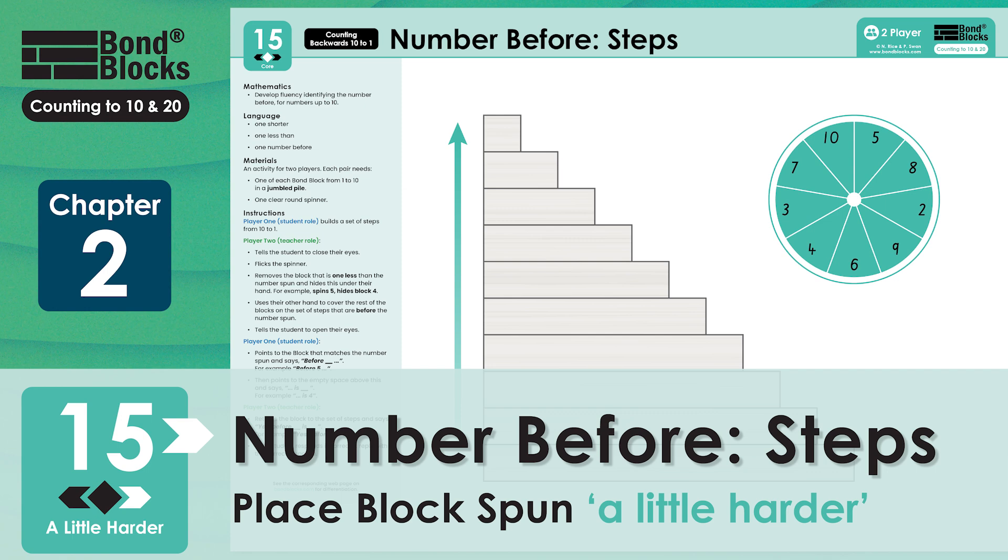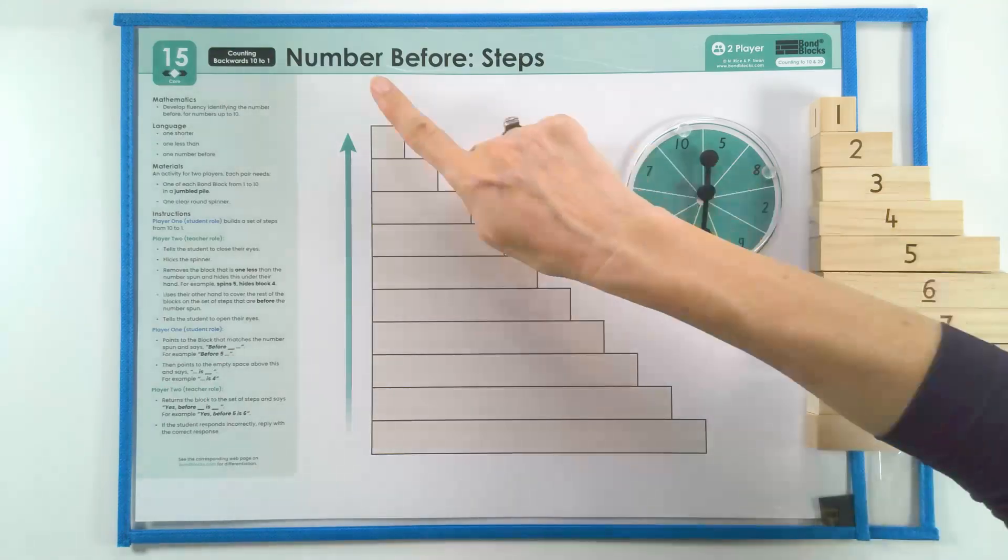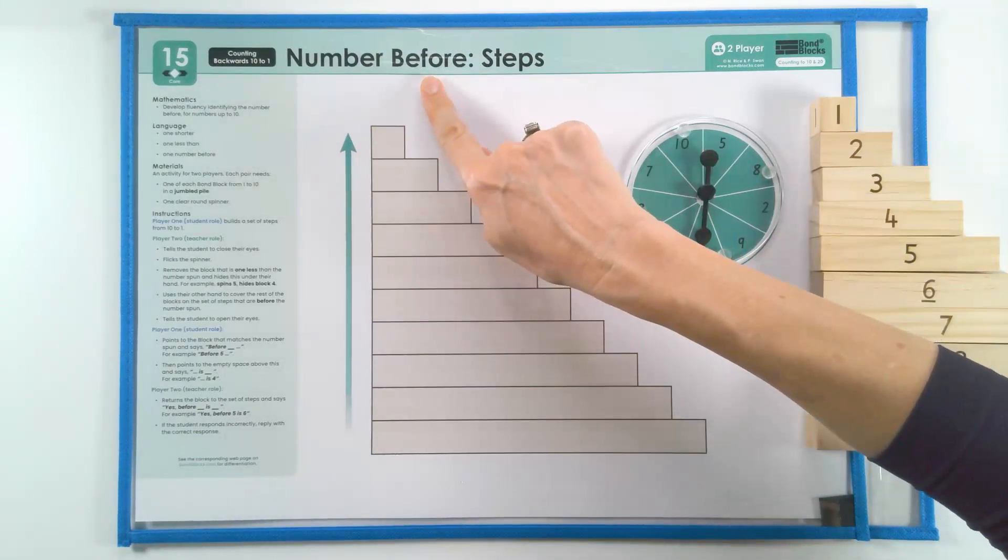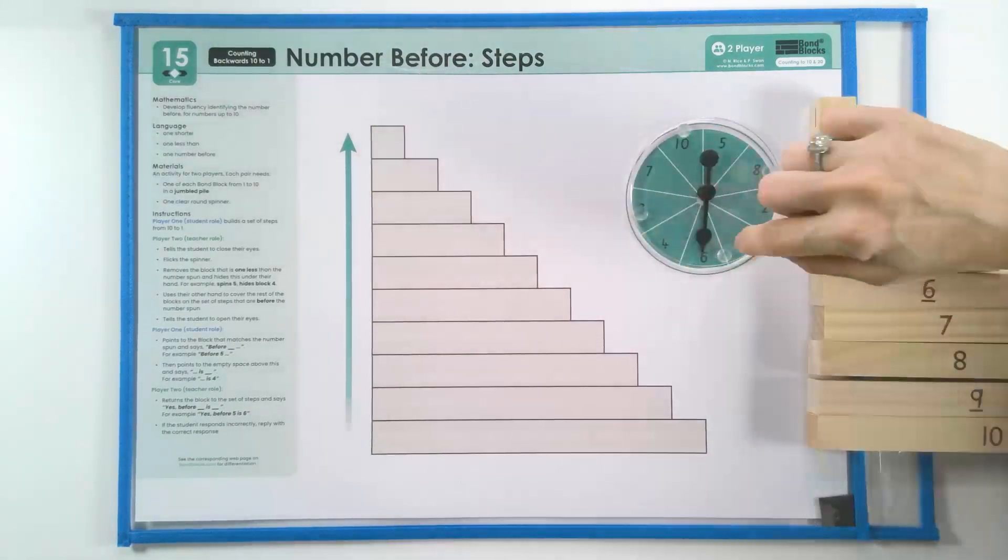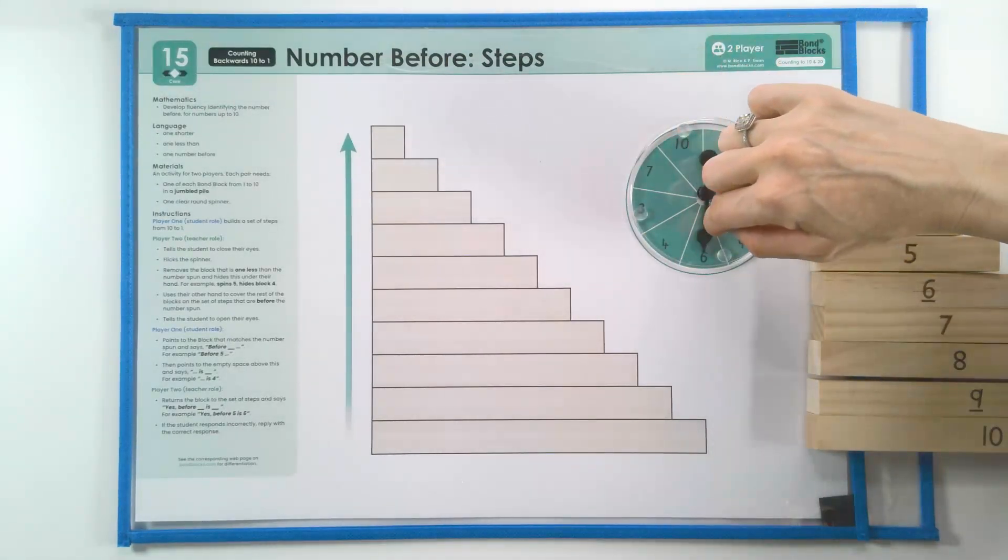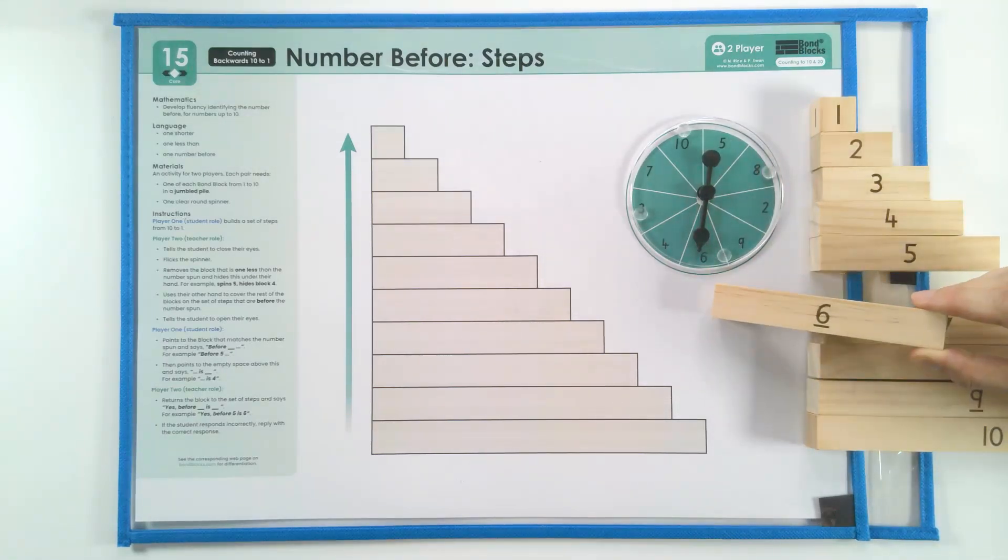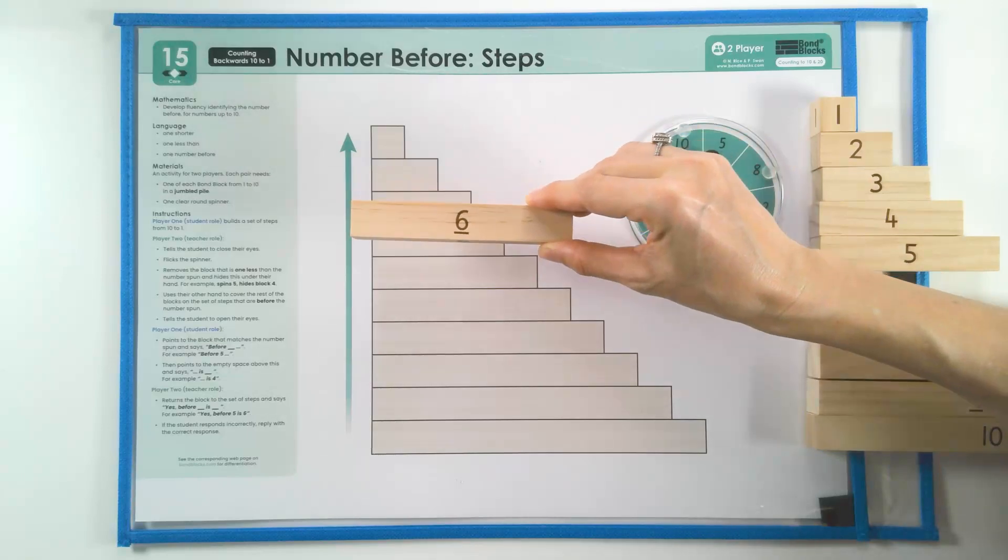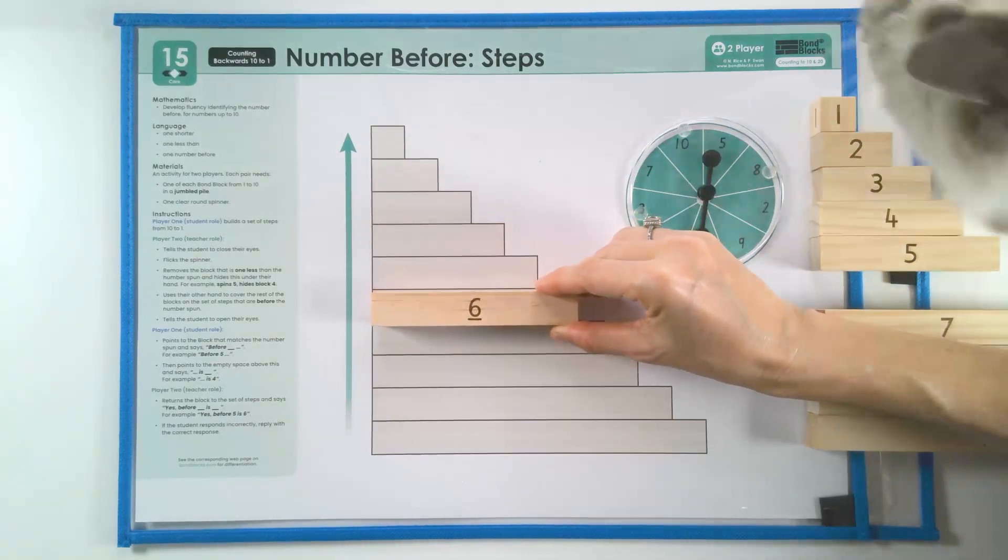Welcome to activity 15, a little harder. In this activity we are still going to say the number before. However, when I flick the spinner, I'm going to place the block that matches the number spun. To place it, I'm not going to count. Instead, I'm going to look at the length.